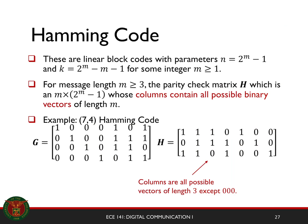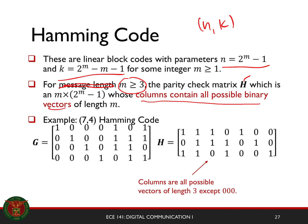The first systematic code formally introduced is the Hamming code. The Hamming code is an (N, K) code where N and K are related to some integer parameter M. If M is greater than or equal to 3, your parity check matrix H contains all the possible binary vectors of length M, except the all-zero vector. For example, the 7,4 Hamming code: if you check the parity check matrix, you have your identity matrix and your parity generator matrix transposed.